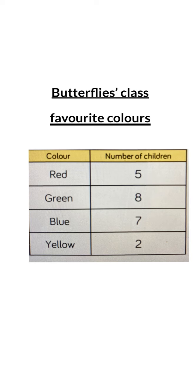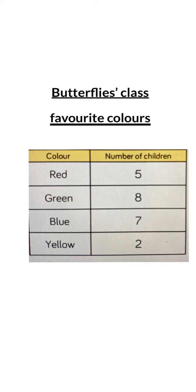In our table here, it tells us five children's favourite colour is red, eight children's favourite colour is green, seven children's favourite colour is blue, and two children's favourite colour is yellow. A table is very similar to a pictogram, but instead you're just using numbers instead of pictures.